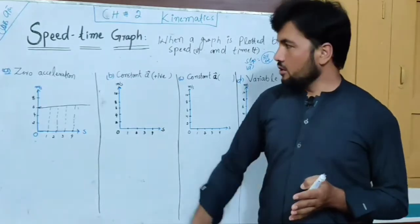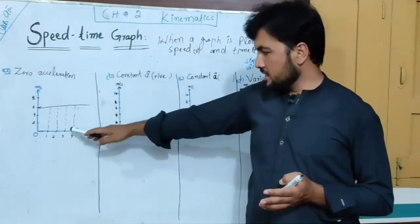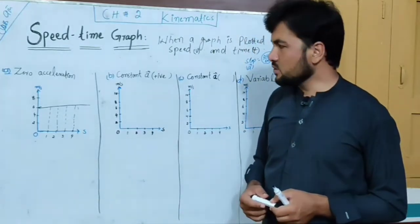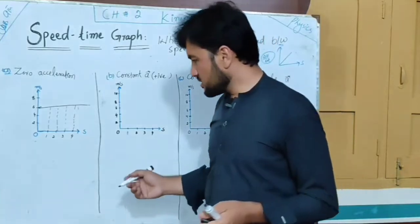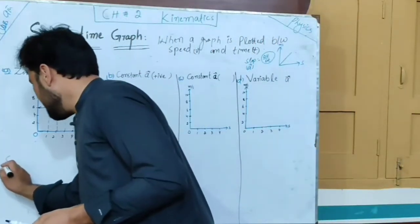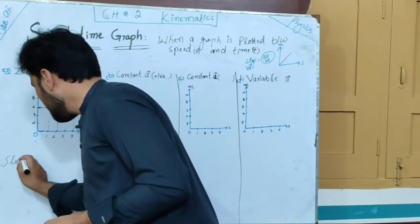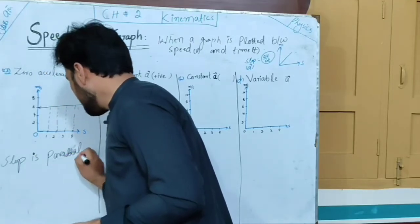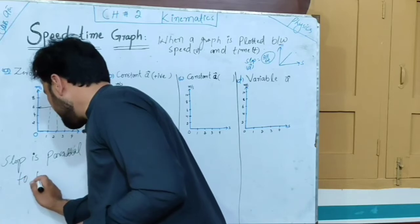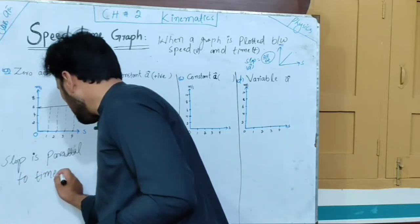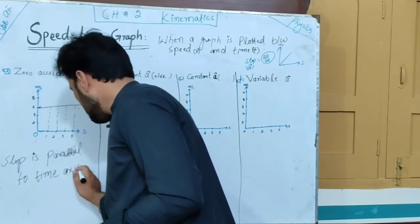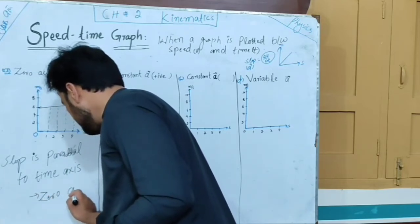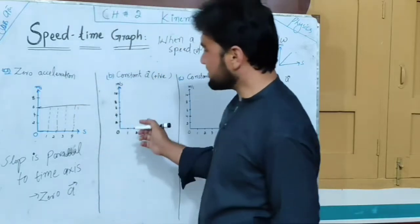In the speed-time graph, when the slope is parallel to the time x-axis, this shows us zero acceleration. When the graph line is parallel to the time axis, it shows zero acceleration.